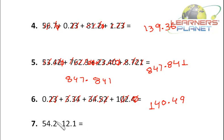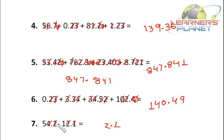Now let's begin with decimal subtraction — it's as simple as addition. It's 2 minus 1 is 1, I put a decimal, 4 minus 2 is 2, and then 5 minus 1 is 4. So the answer is 42.1.